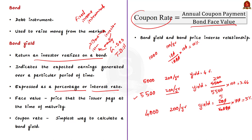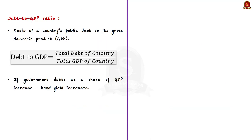Now we will understand the relationship between bond yield and debt-to-GDP ratio. The debt-to-GDP ratio is the ratio of a country's public debt to its gross domestic product. The conventional view is that government debt and deficits have a decisive effect on government bond yields. If the government debt as a share of GDP increases, bond prices will come down because investors will no longer be willing to invest in government bonds, and so bond yield will increase.